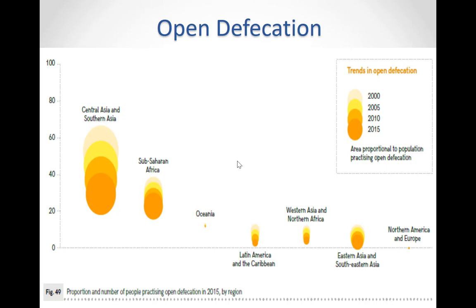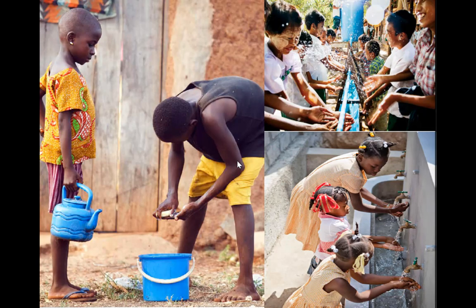Open defecation is incredibly dangerous, as human waste can cause diseases such as cholera, typhoid, hepatitis, polio, diarrhea, worm infestation and undernutrition. Five countries — India, Indonesia, Nigeria, Ethiopia and Pakistan — account for 75% of open defecation globally. India has the largest number of people still defecating in the open, with more than 564 million people doing so.